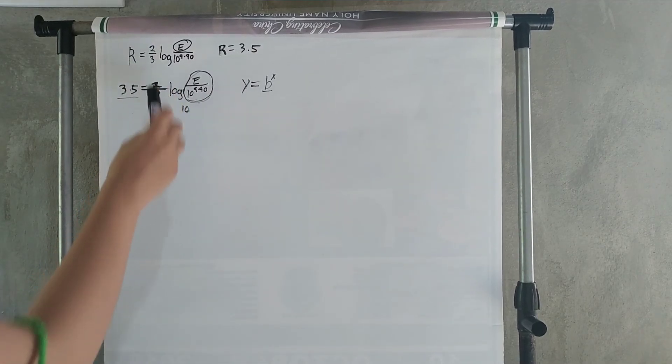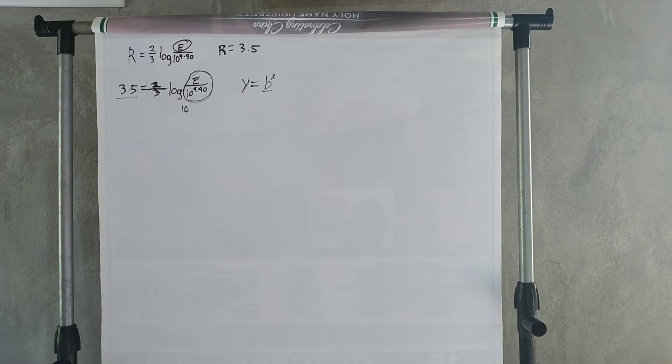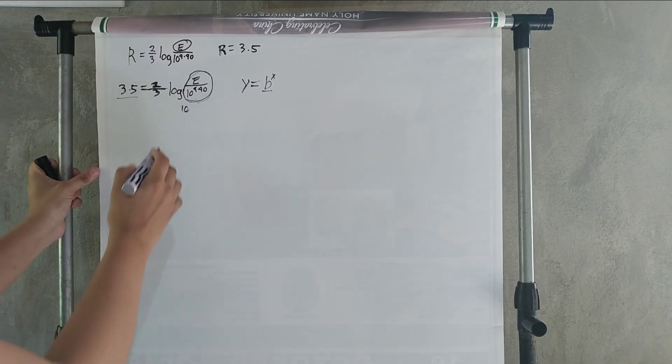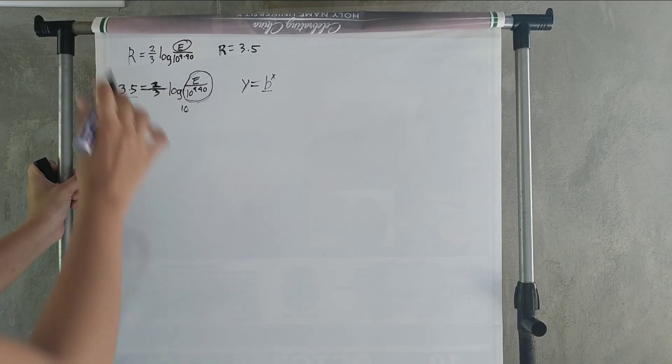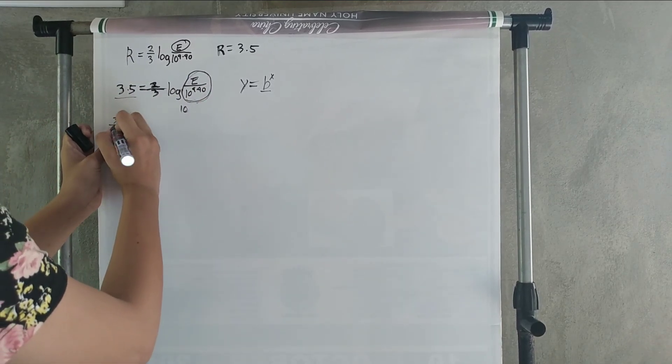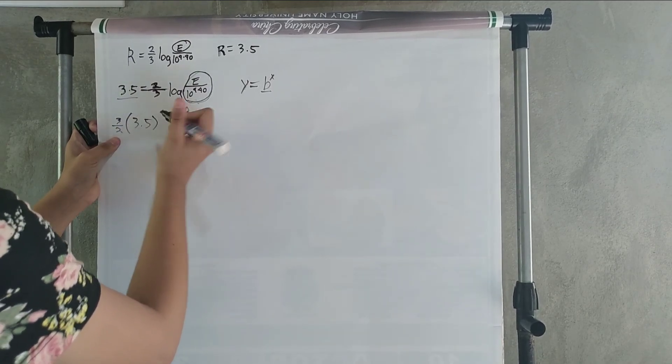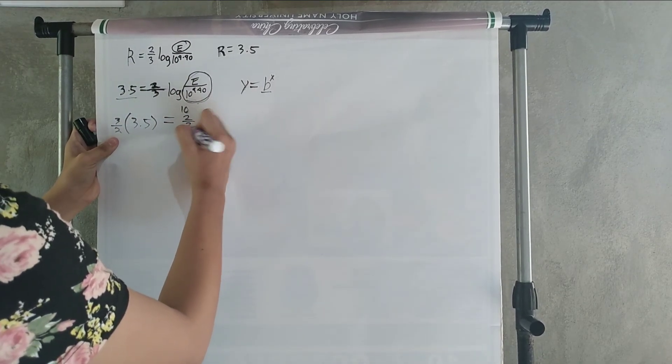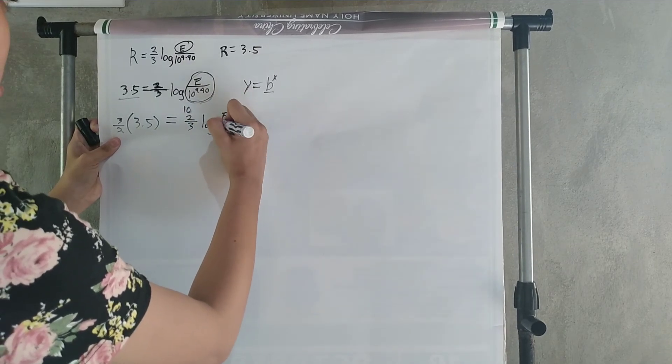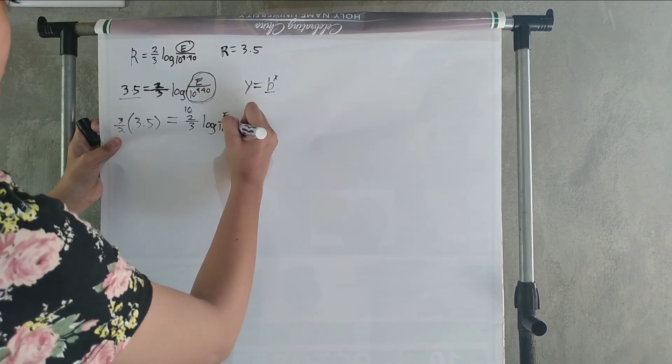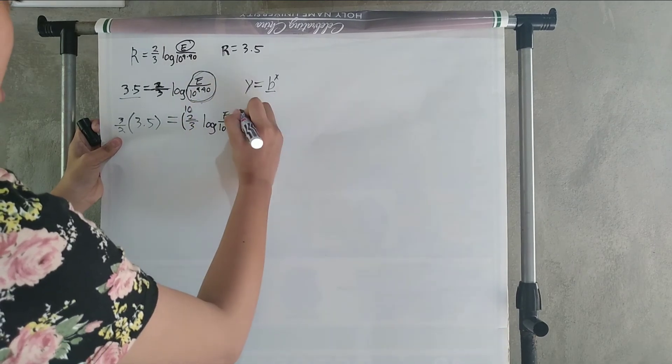First, we have to get rid of 2 thirds. To get rid of 2 thirds, we have to multiply the reciprocal of 2 over 3, which is 3 halves on each side. So, it will become 3 over 2 times 3.5 equals 2 over 3 log E over 10 to the power of 4.40 times 3 over 2.